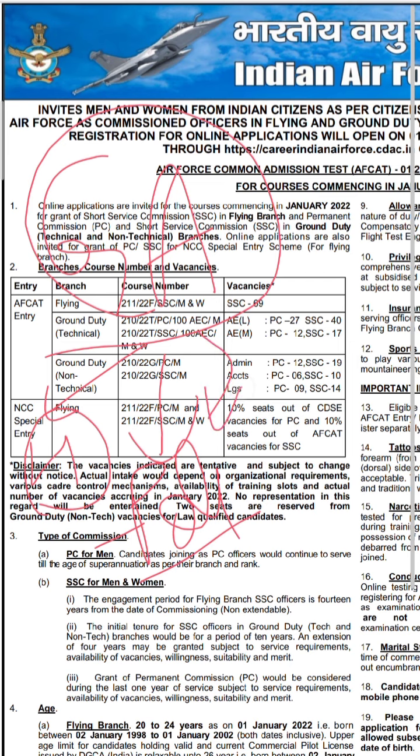The next thing you need to do is art and culture. In art and culture, you need to memorize — literally memorize — the dance forms and which region each particular dance form belongs to. For example, the Hornbill Festival, which is often in the news — you need to know where it takes place. You can also study these from previous year questions, which is very helpful.